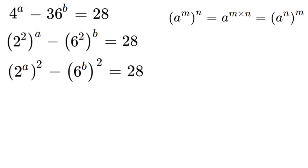Now we've set ourselves up in a great situation to solve this because now we can use a wonderful algebra principle. If we had x squared minus y squared that's equal to x plus y times x minus y. Now in this situation our 2 to the power of A would be our x and our 6 to the power of B would be our y.